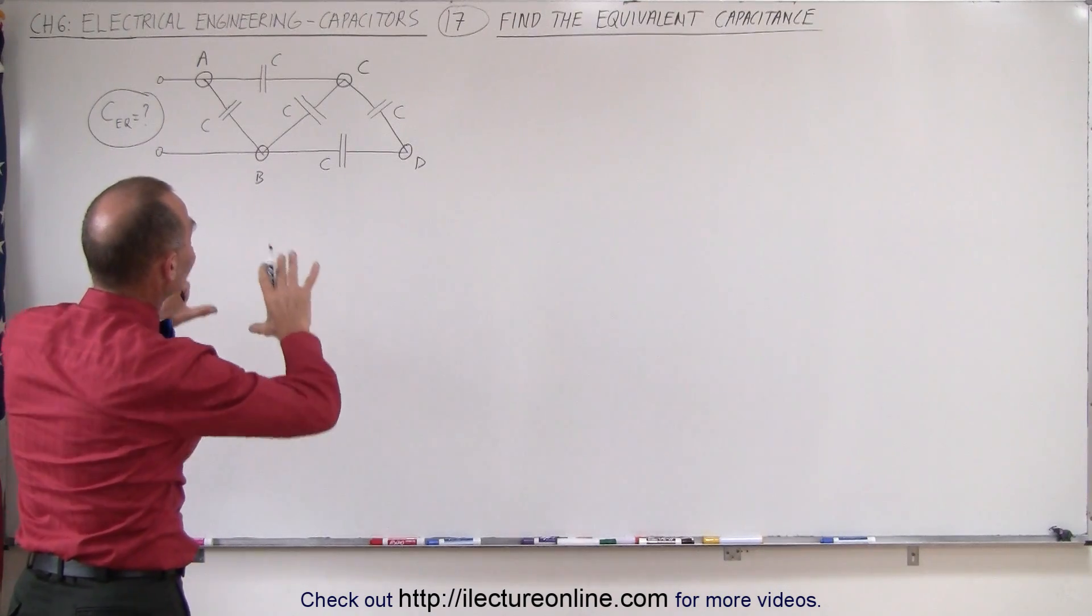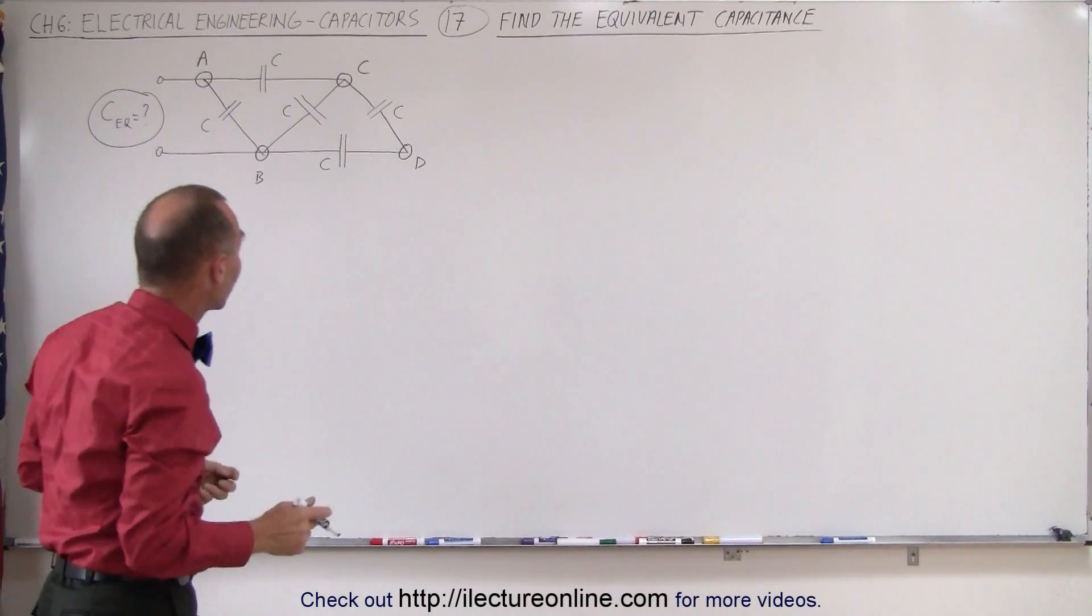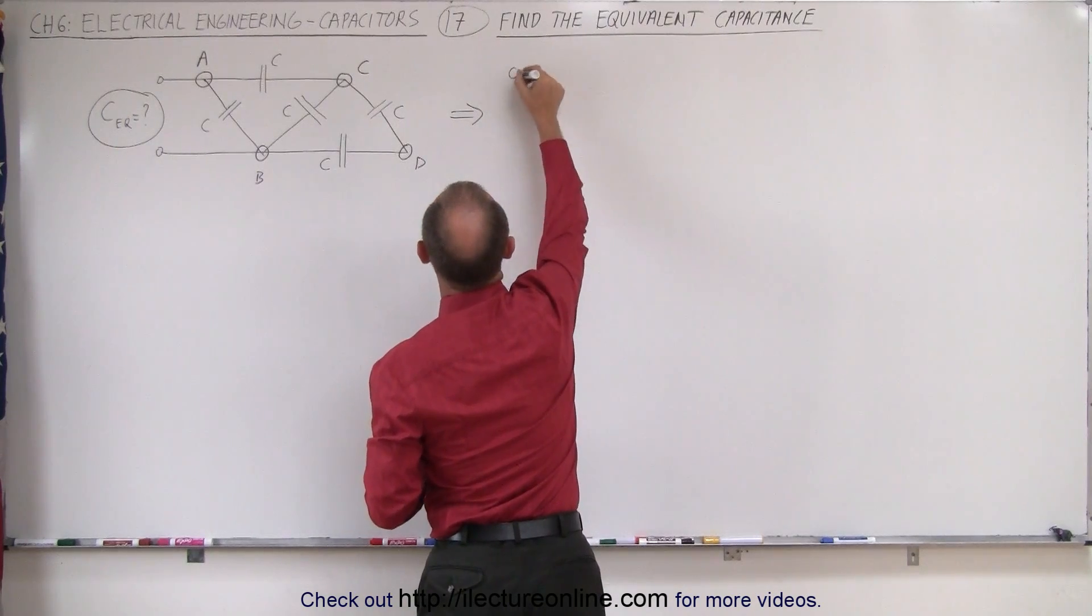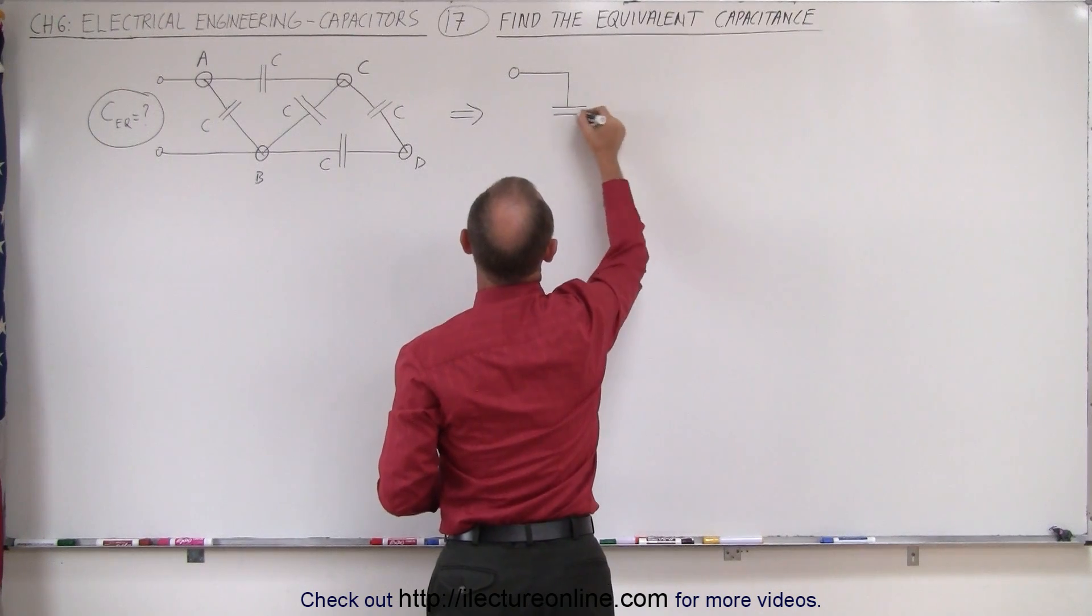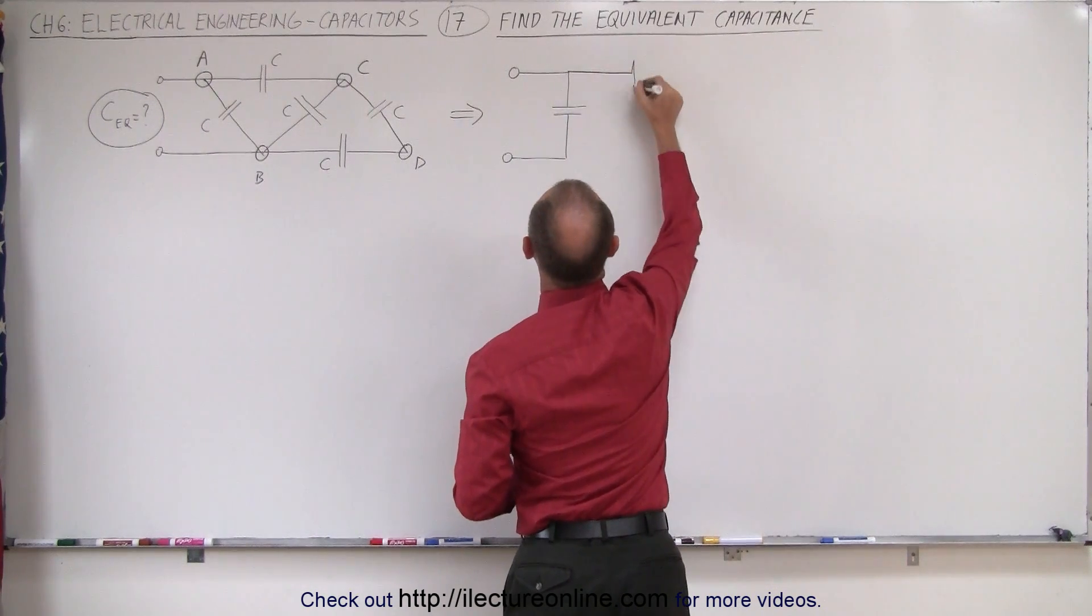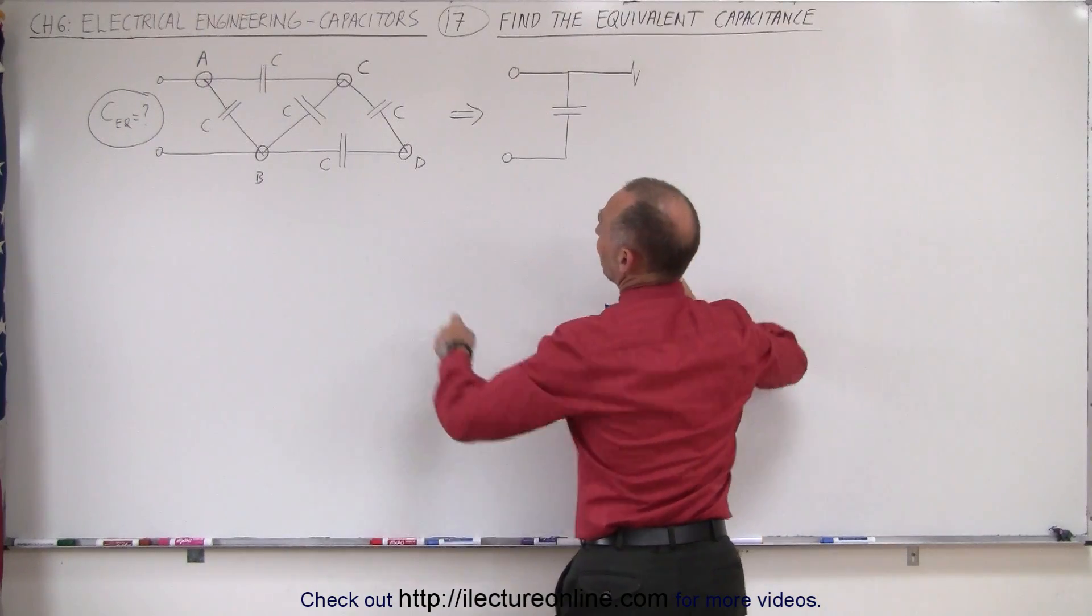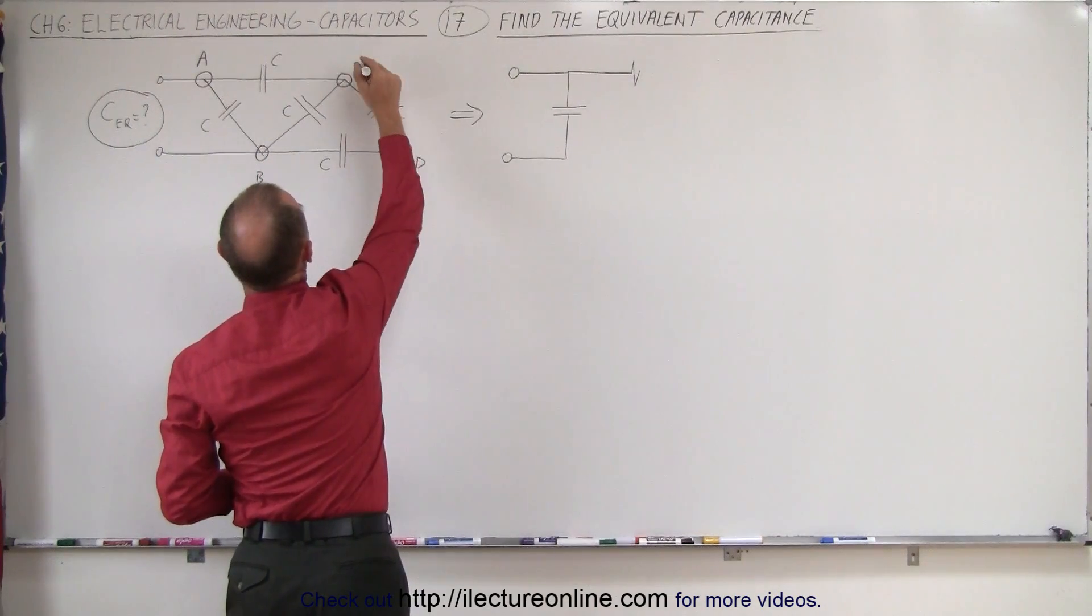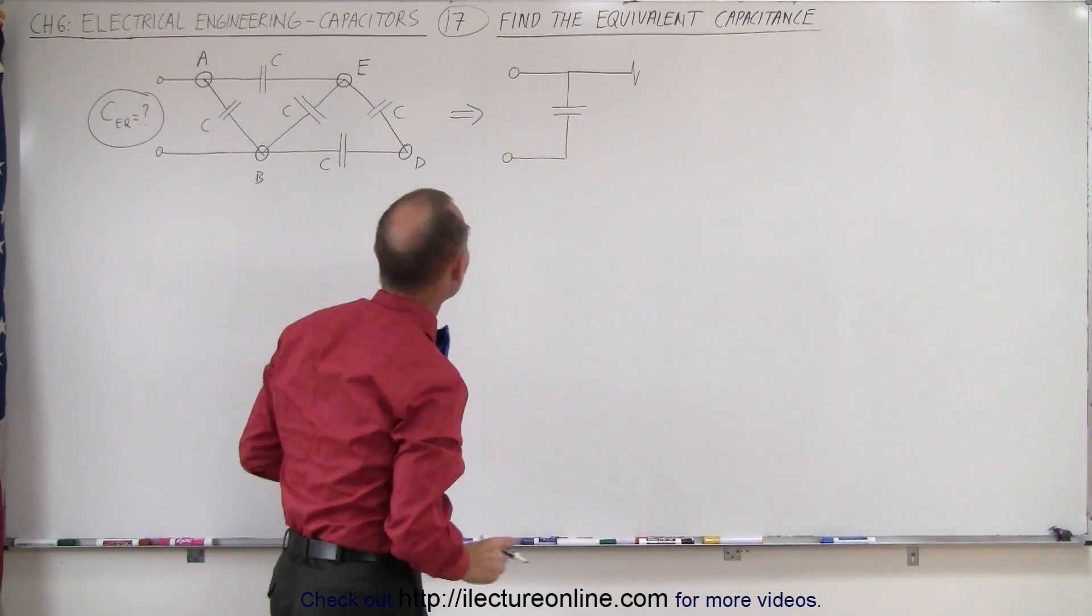And what we can now do is redraw the circuit and we can keep track of where A, B, and C is so that you can see that we really have the same circuit even though we're redrawing them. So what we're going to do instead is we're going to draw the circuit as follows. I have A, B, C. I'm going to call this E. Otherwise, I don't want to confuse the C's of the capacitances with the junction right there.